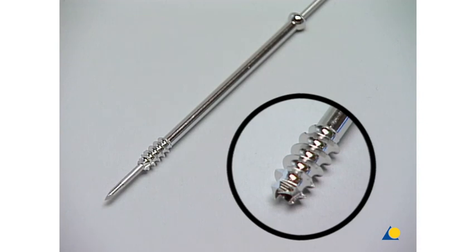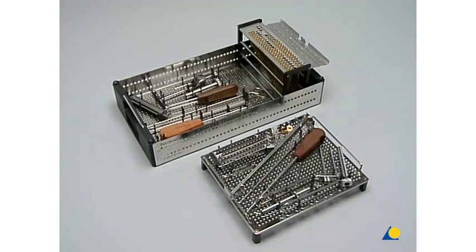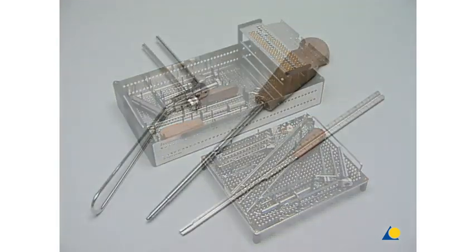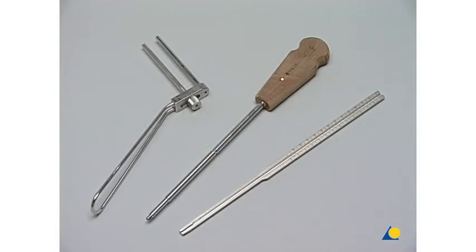Instruments and implants are stored in a special tray. For our exercise, we basically need only these three instruments: a parallel wire guide where one sleeve is adjustable, a cannulated screwdriver, and the direct measuring device for wires from 2 to 2.8 millimeters.